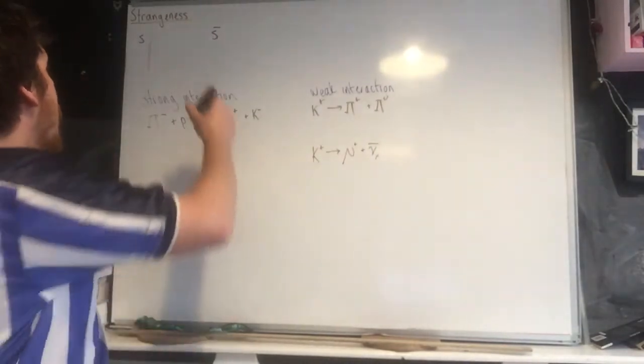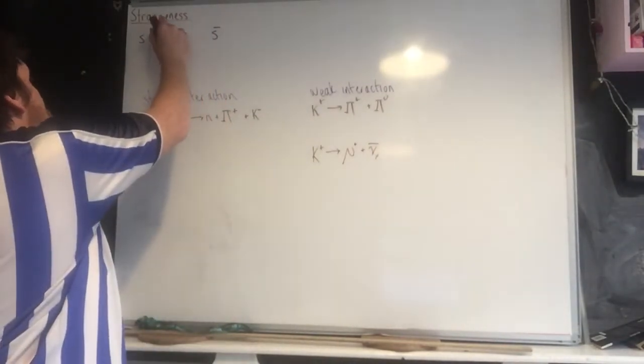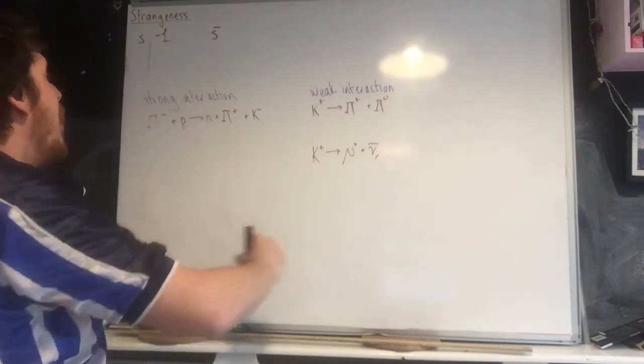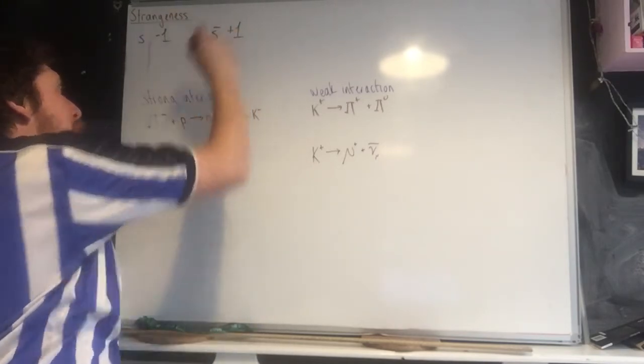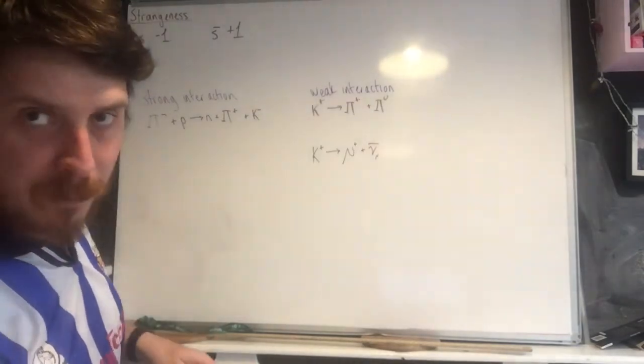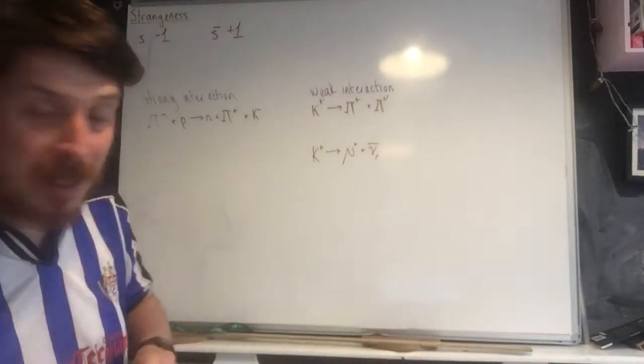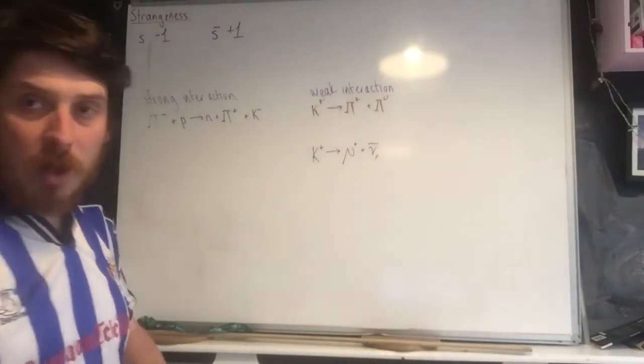There are S-quarks. An S-quark has strangeness of minus one, and an anti-S-quark has strangeness of plus one. That is on the AQA physics data sheet.